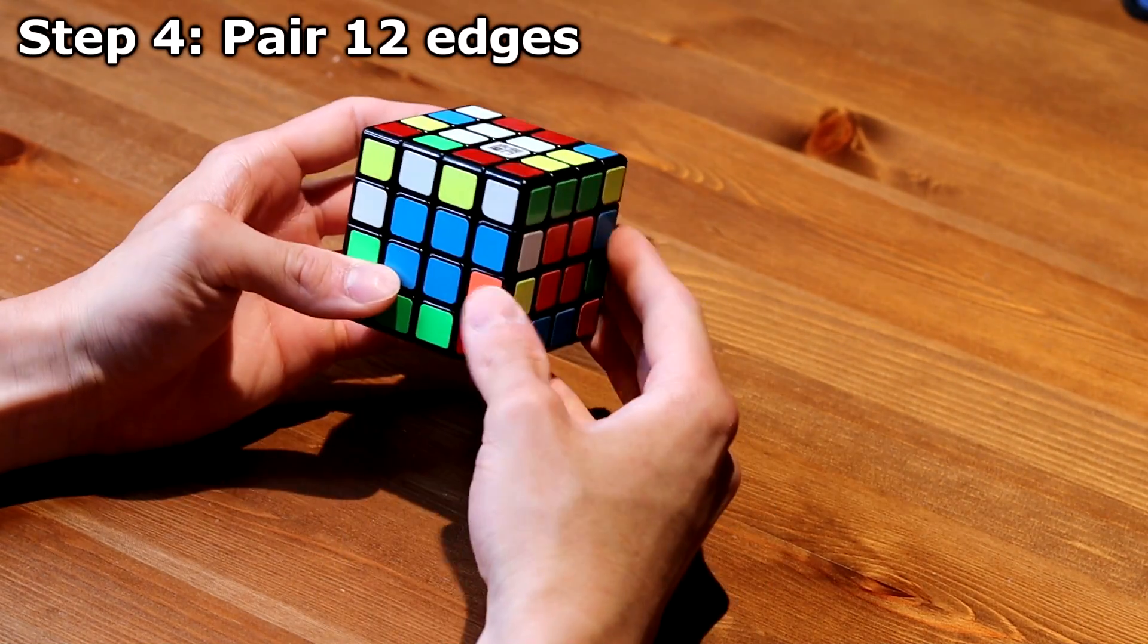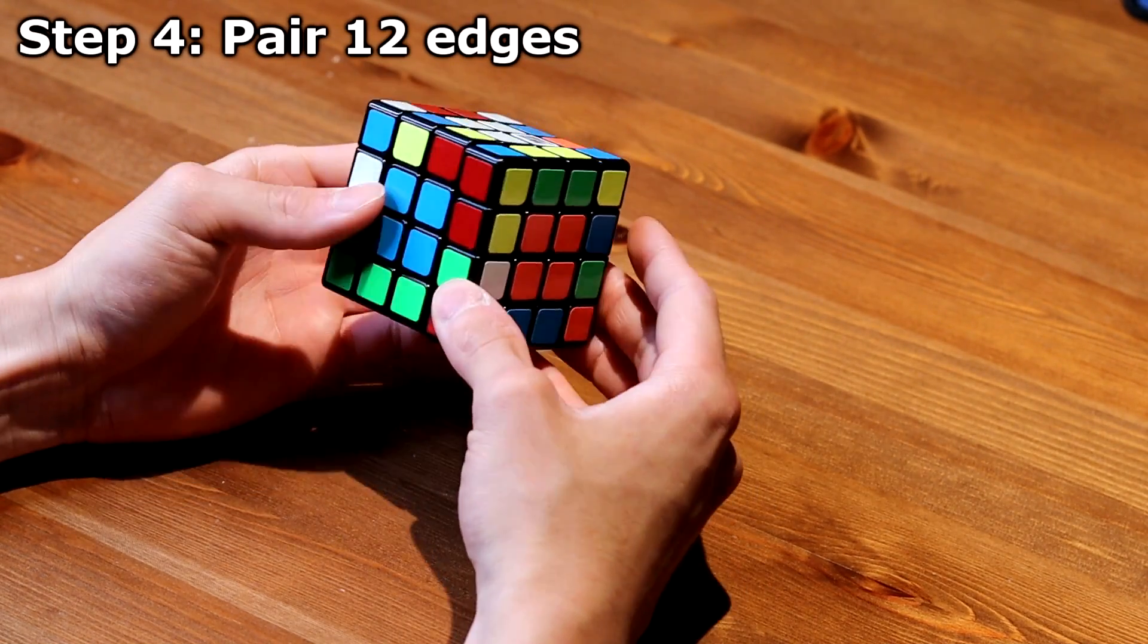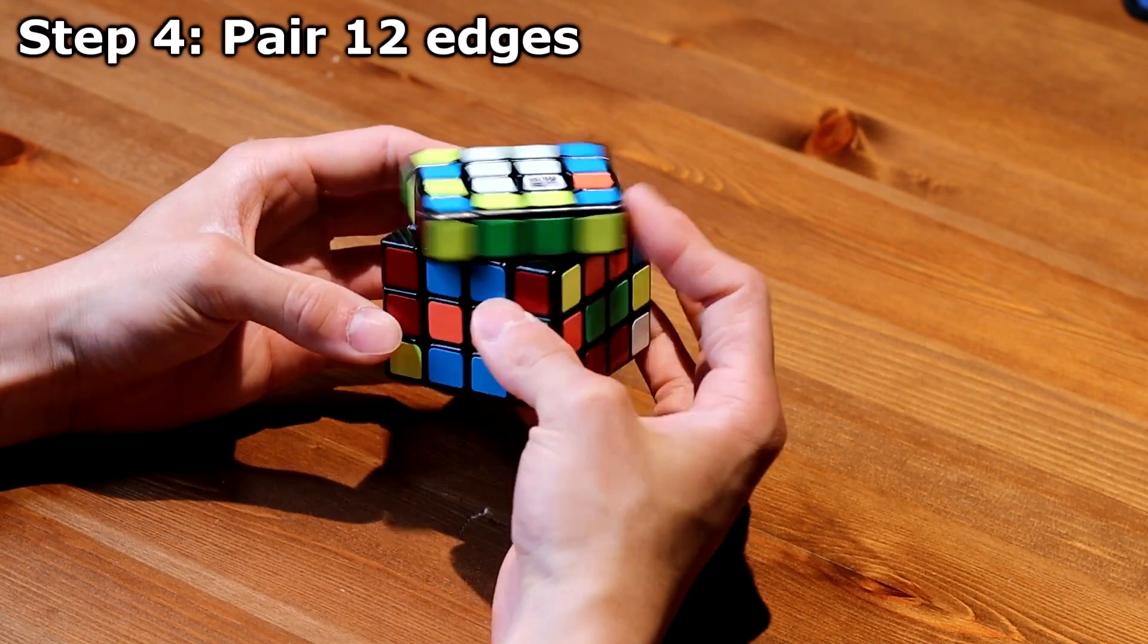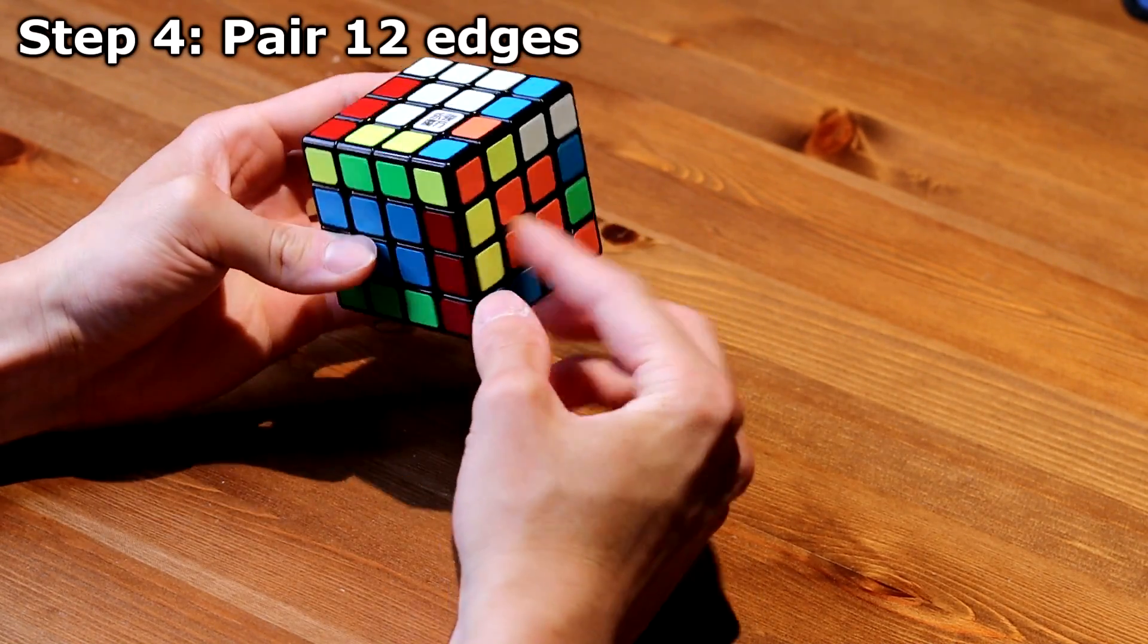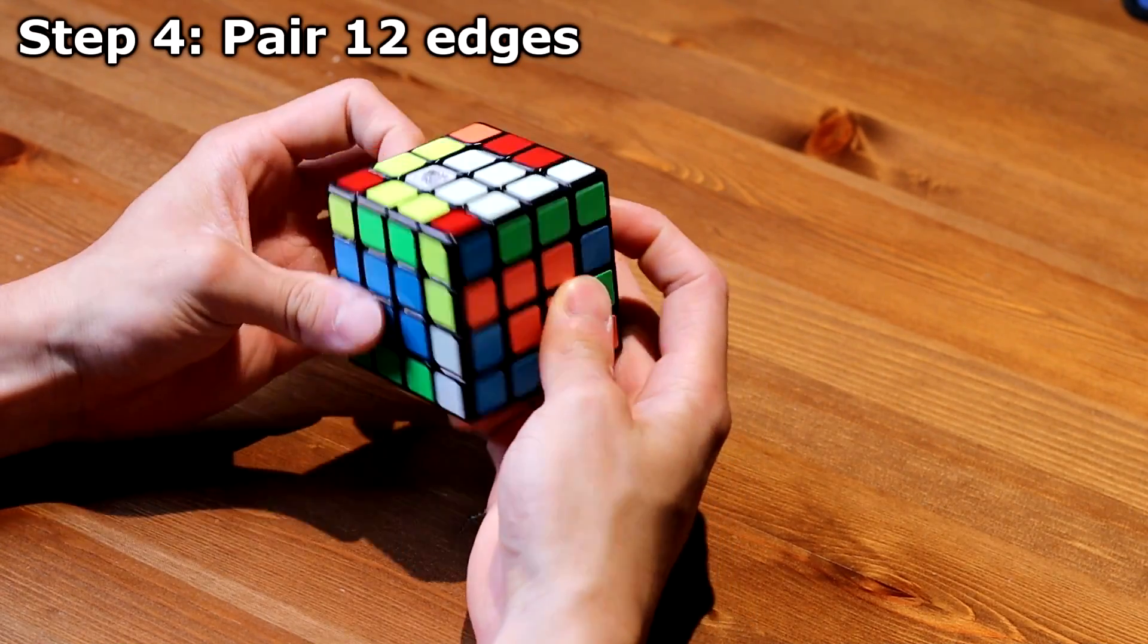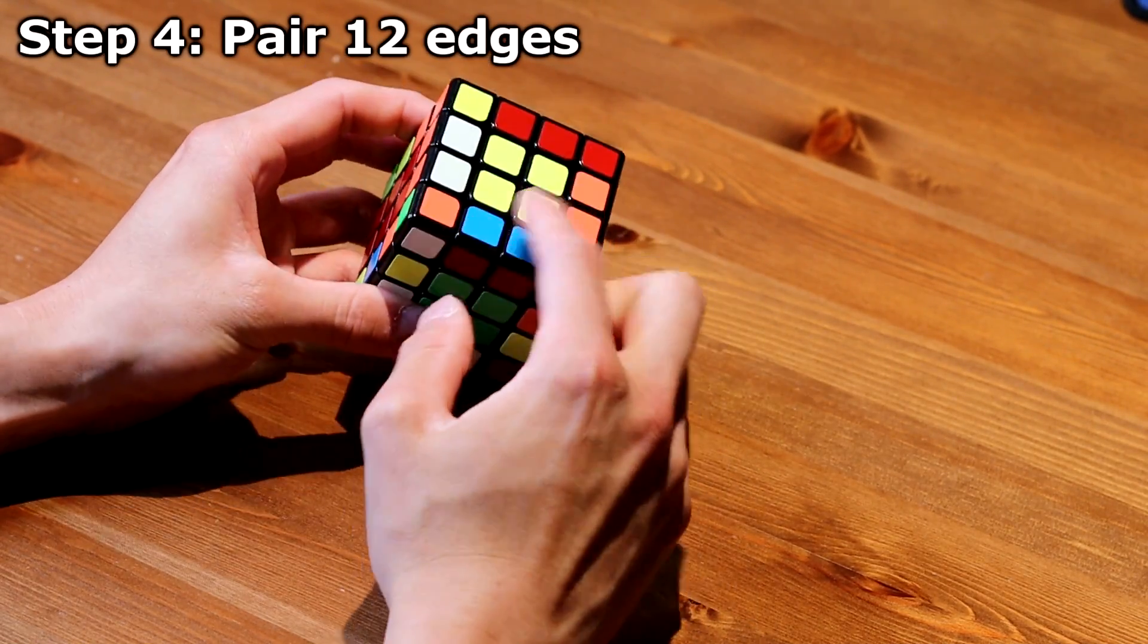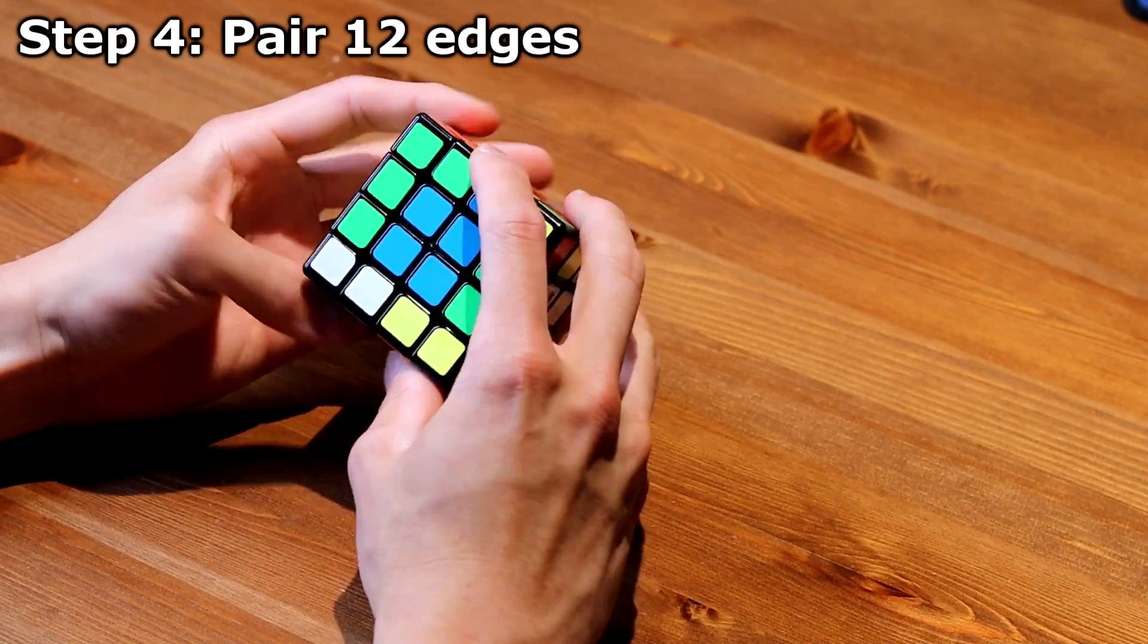Another green and white, move that to the same layer, slice it, put it to the top, unslice, and like that. And then this red and yellow already solved, so I can move that to the top. So I have four top, four bottom, I have four more edges to go.